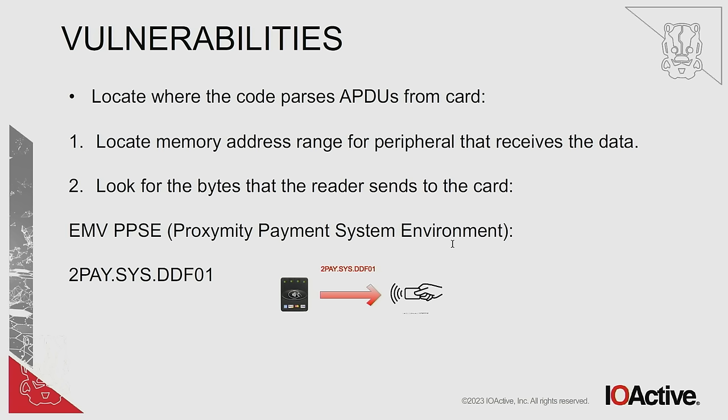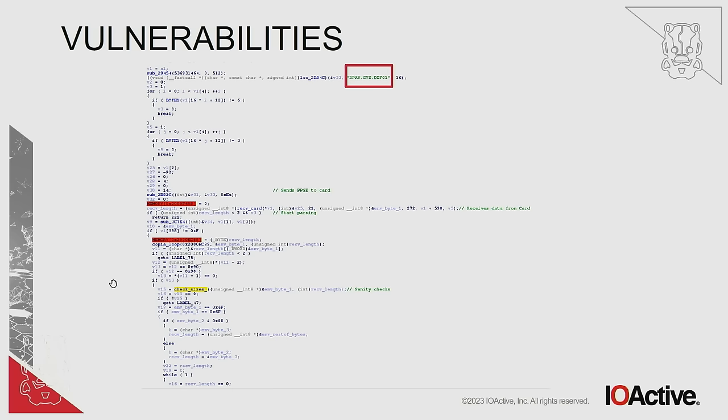My first goal was to locate in the firmware where it starts reading the content of the credit card. I knew from learning about EMV transactions that something called the Proximity Payment System Environment (PPSE) — a specific byte sequence — is sent by the reader to the card in the very first communication. I just needed to find those bytes in the code, and I found them. From there I started reverse engineering and understanding what the code was doing, and eventually identified and renamed a function as 'receive_card' — the function where it starts reading from the card over the NFC interface.